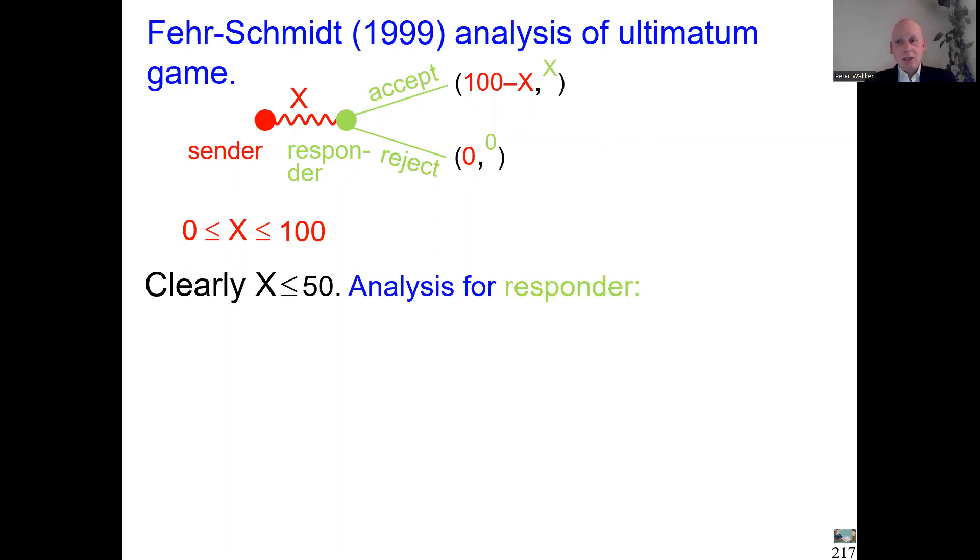First point to note is that never more than 50 will be sent. Because imagine you are the sender and already at 50 or above, if you increase your payment more, the wealth you're left with is less. But also the inequality will increase because the other guy is already having more. So that's just bad. Therefore the sender at X≤50 will stop sending more. That also means the sender always ends up with more money than the responder.